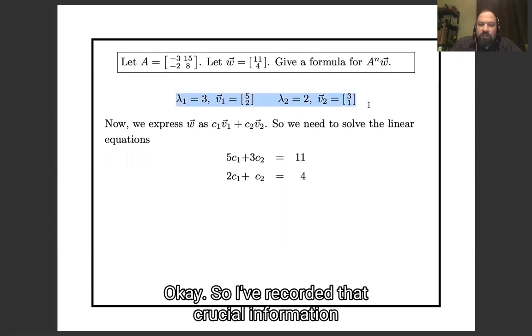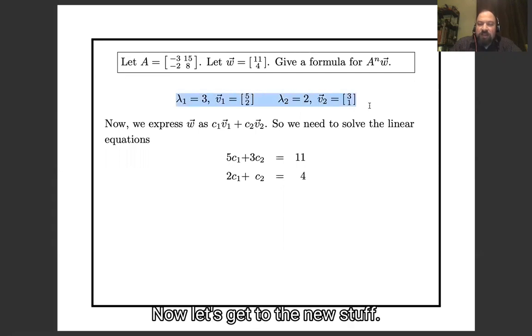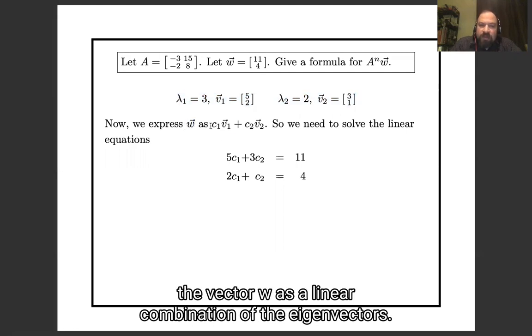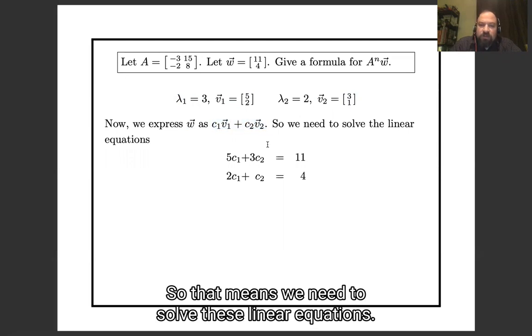Okay, so I've recorded that crucial information up at the top of the slide. Now let's get to the new stuff. The next step is that we express the vector w as a linear combination of the eigenvectors. So that means we need to solve these linear equations.